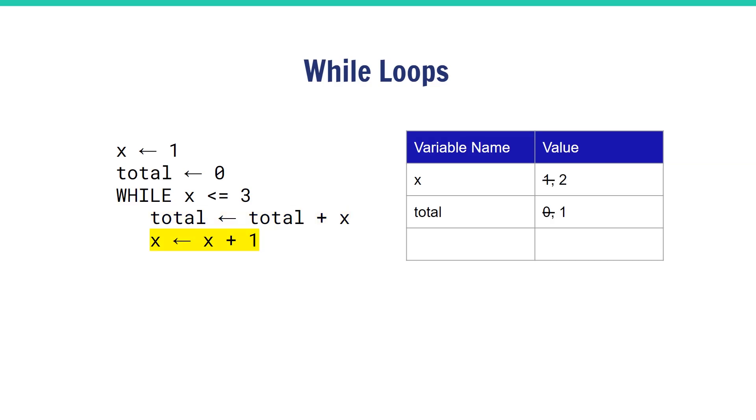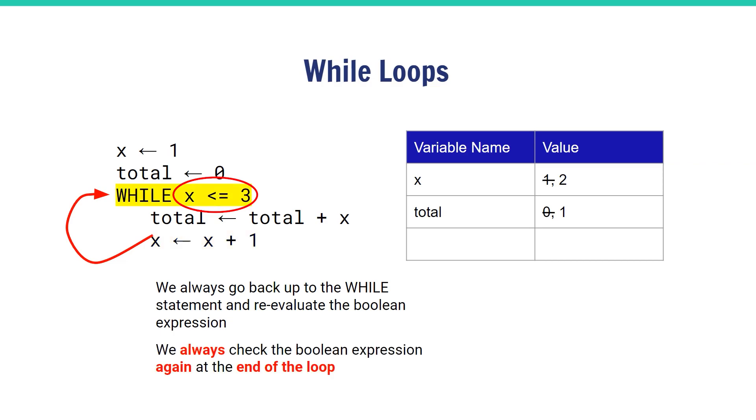We go in and execute the lines of indented code. Total gets updated and x gets updated. But unlike an if statement where it finishes, in a while loop once we've finished executing all the indented lines of code, we check the boolean expression again. The boolean expression is checked at the beginning of the loop.